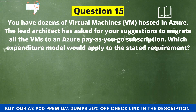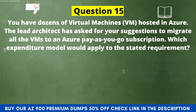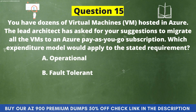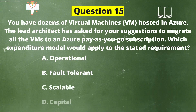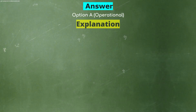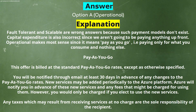Next question. You have dozens of virtual machines hosted in Azure. The lead architect has asked for your suggestions to migrate all the VMs to an Azure pay-as-you-go subscription. Which expenditure model would apply? Option A: Operational. Option B: Fault Tolerant. Option C: Scalable. Option D: Capital. The correct answer is Option A — Operational. Fault tolerant and scalable are wrong answers because such payment models do not exist. Capital expenditure is also incorrect since we are not going to be paying anything upfront. Operational makes the most sense since it means pay-as-you-go — paying only for what you consume.